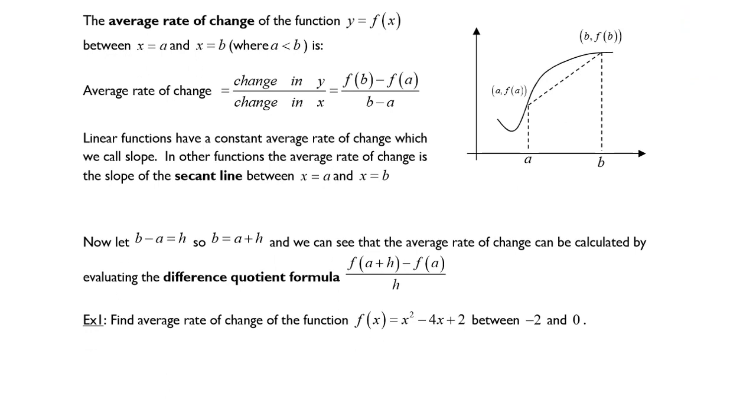The average rate of change of the function y equals f of x between x equals a and x equals b, where a is less than b, is as follows. The average rate of change is equal to the change in y over the change in x, or we can say f of b minus f of a all over b minus a.